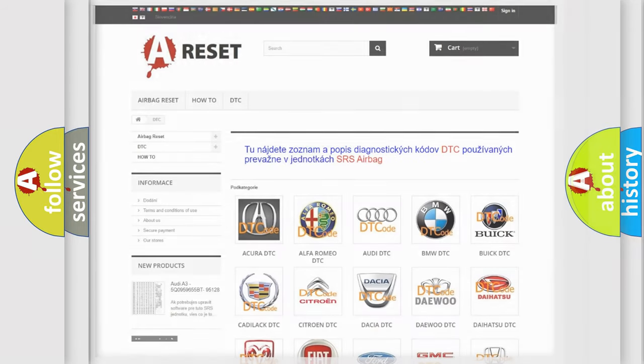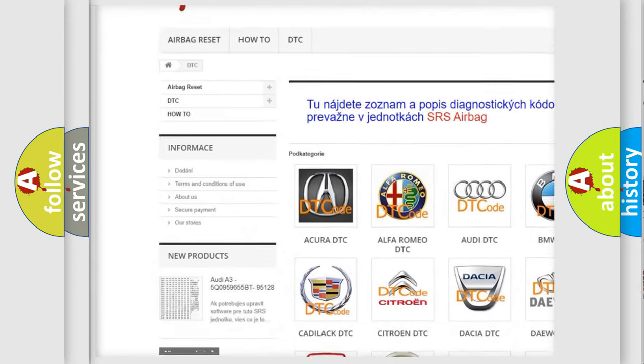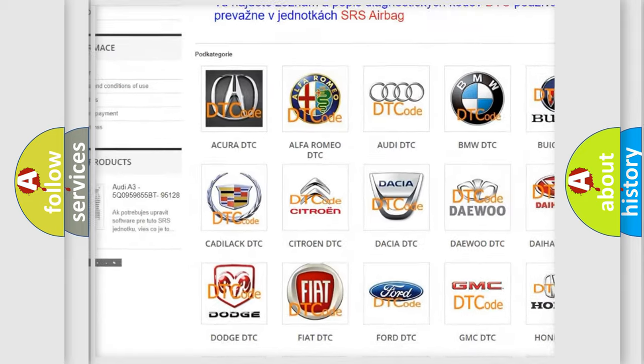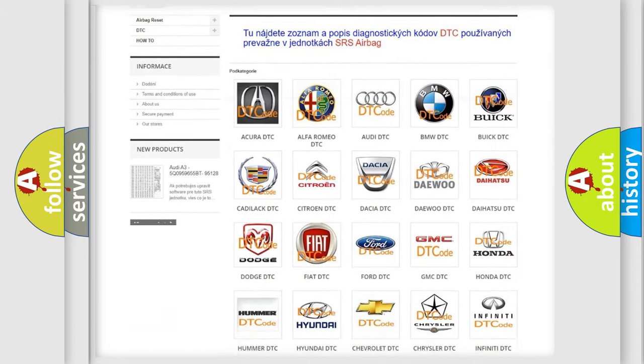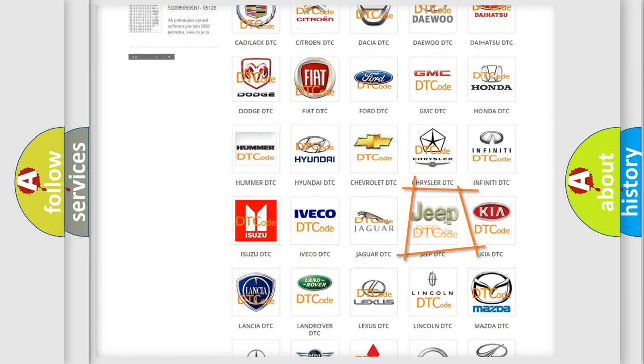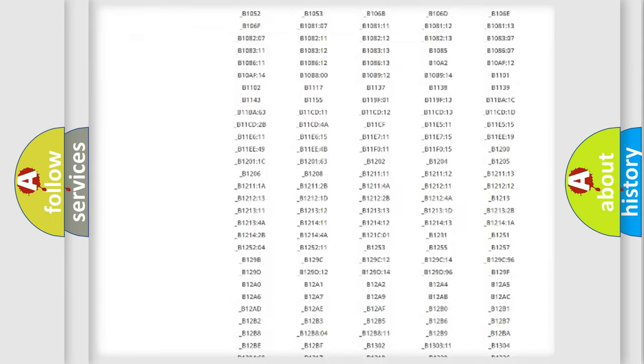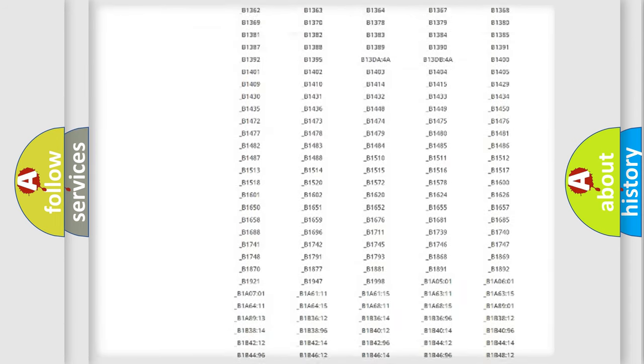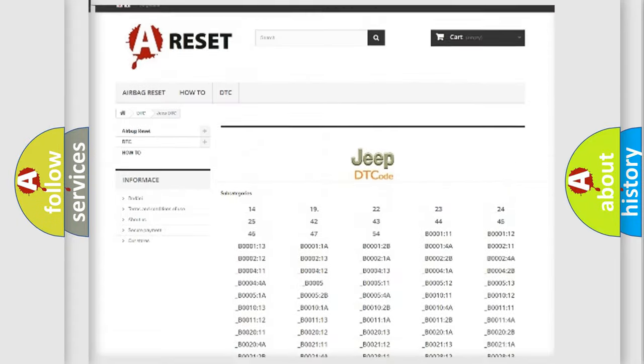Our website airbagreset.sk produces useful videos for you. You do not have to go through the OBD2 protocol anymore to know how to troubleshoot any car breakdown. You will find all the diagnostic codes that can be diagnosed in a car, jeep, vehicles.